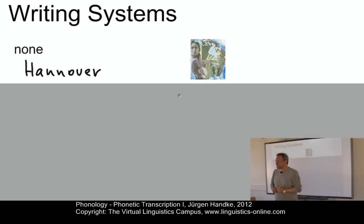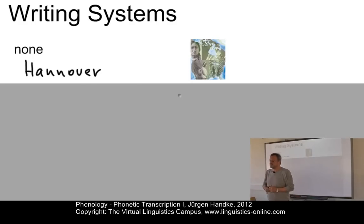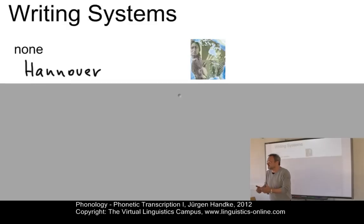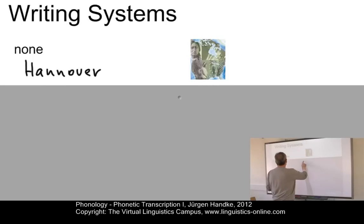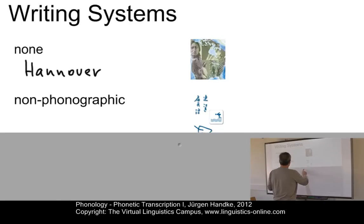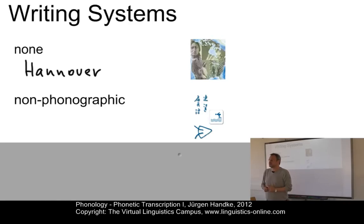Nevertheless, we could argue that since the remaining 15% of the languages that have a writing system constitute about 60% of the world's population, we might think that we perhaps do not need an extra phonetic alphabet because their languages have writing systems. Yet, not all of these writing systems are phonographic. For example, in languages such as Chinese, the non-alphabetic orthography generally does not give any direct information about pronunciation.